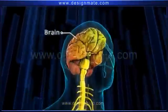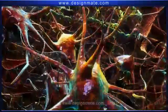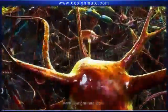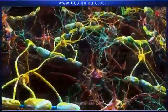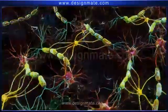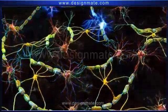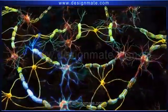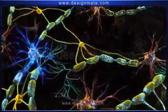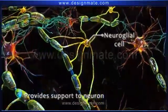In human beings, the brain is the center of the nervous system. A magnified view of the brain shows a network of neurons. The neurons play a vital role in the transmission of nerve impulses. The other type of cell present is the neuroglial cell, which helps in providing support to the neuron.